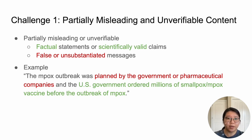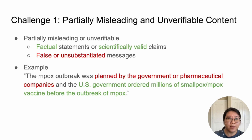For example, at the early stage of the MPOX outbreak in 2022, some posts correctly noted that the U.S. government ordered millions of smallpox or MPOX vaccines before the outbreak, which is in fact for preventive stockpiling. However, the post also contains the conspiratorial message that the MPOX outbreak was planned by the government, which is incorrect. Such a mixture of accurate and inaccurate content not only incorrectly enhances the perceived credibility of the posts, but also makes automatic detection more difficult.